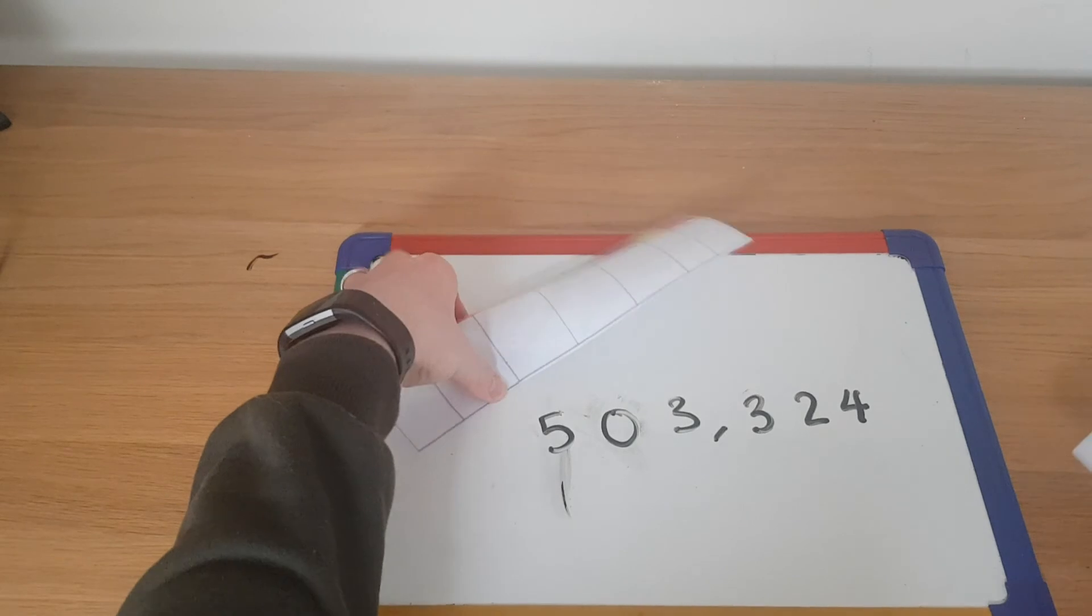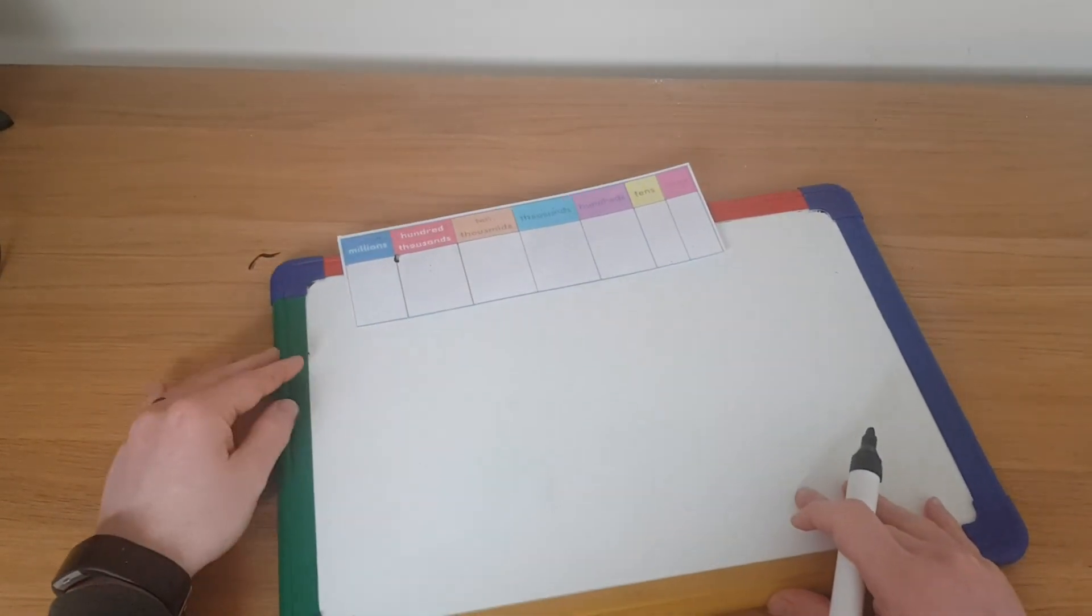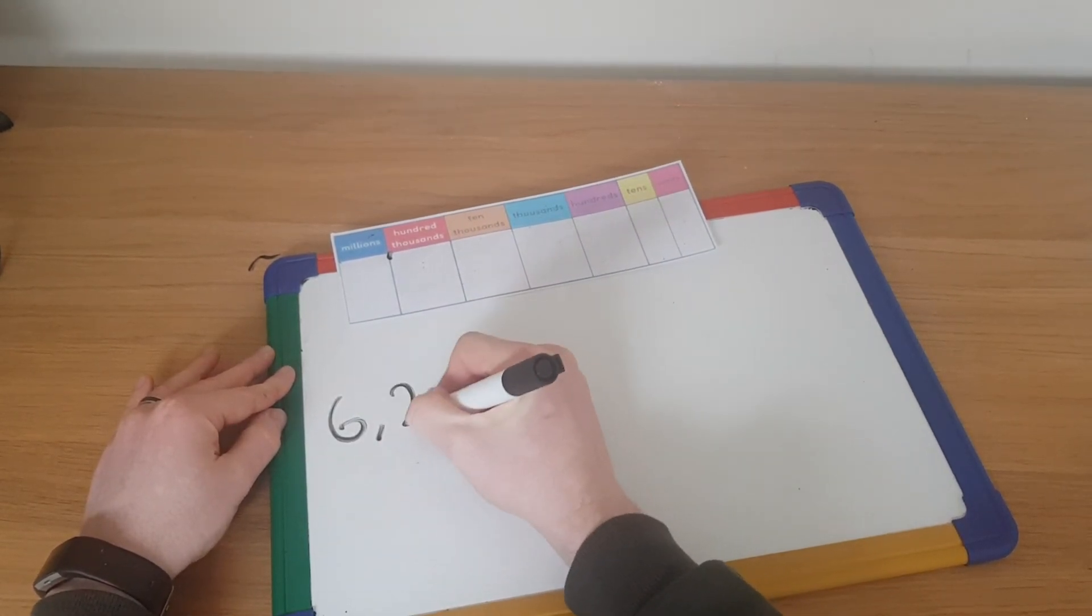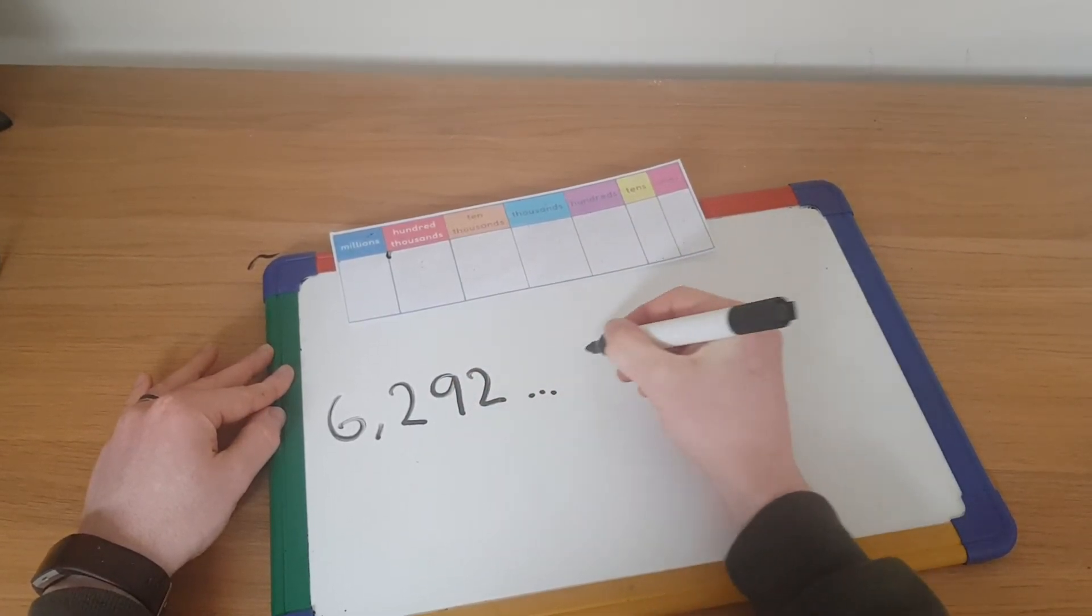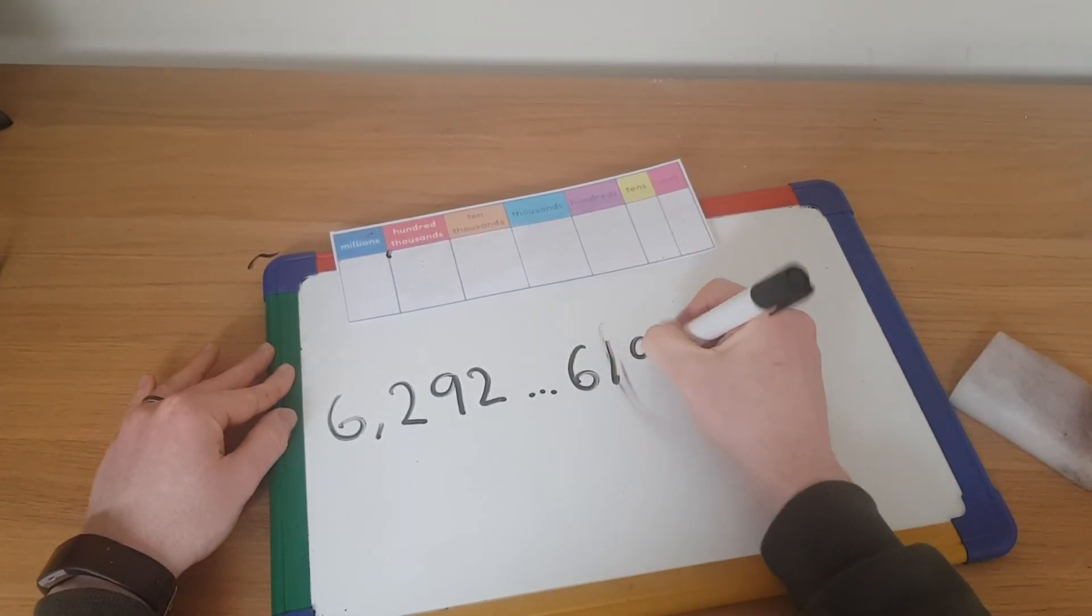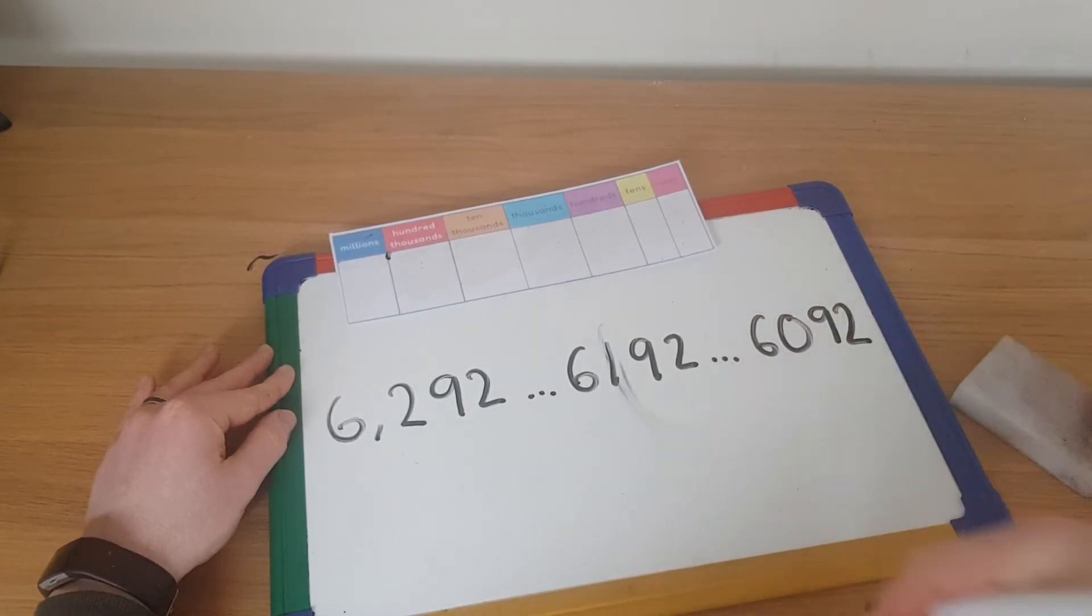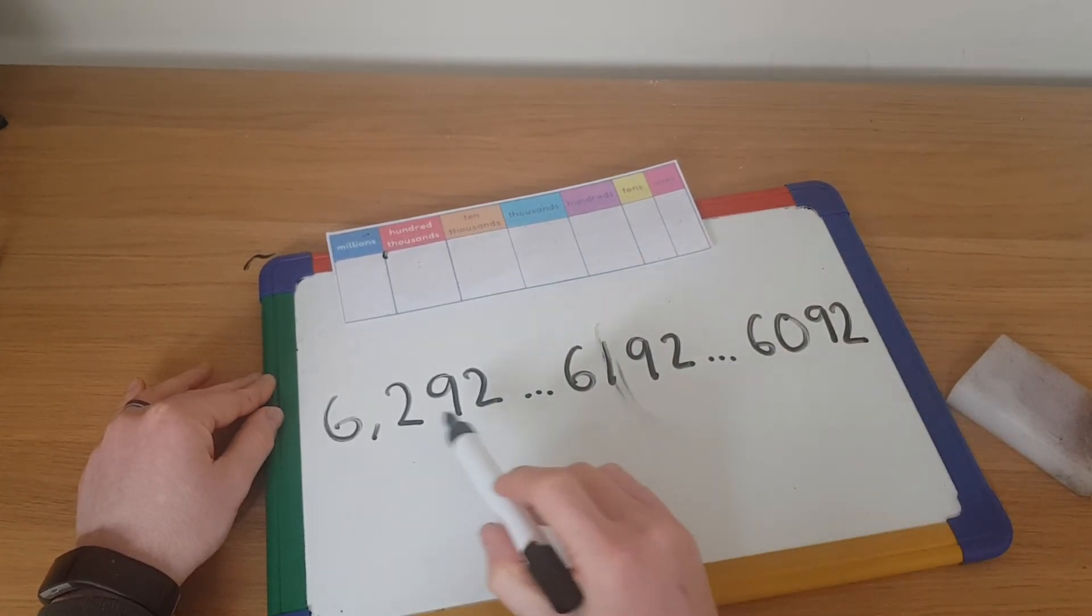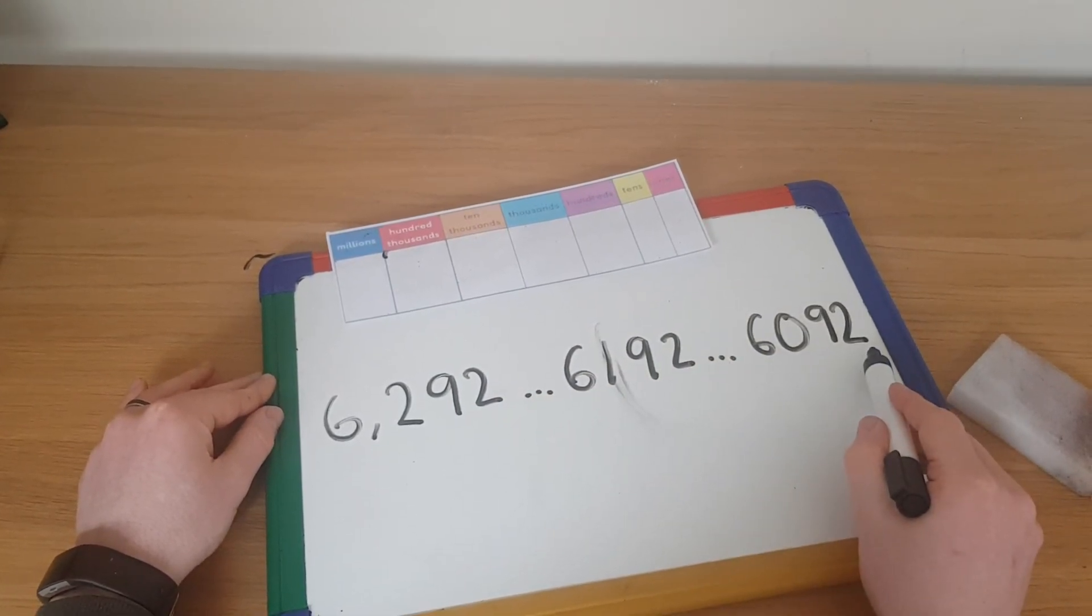Last question then. You might see questions like this where you get given a few numbers. So six thousand two hundred and ninety-two. Your next number might be six thousand two. No. One thousand and ninety-two. And your next number then will be six thousand and ninety-two. And the question might be, what is the next number in the sequence? So then what you're then doing is looking at which column is changing. Well, ninety-two, ninety-two, ninety-two stays the same. I've got six, six, and six. The column that's changing then is the hundreds. My ones and my tens are the same. Hundreds.